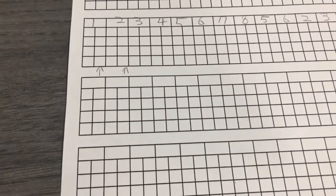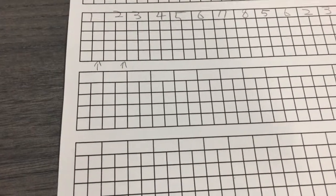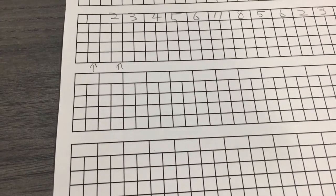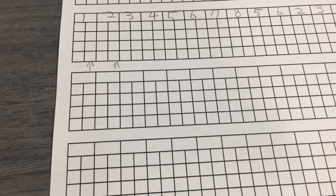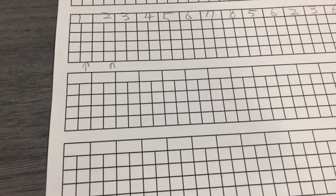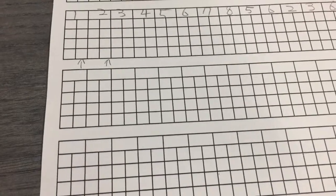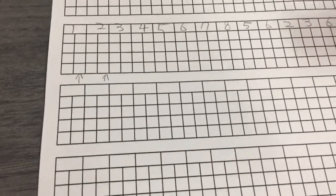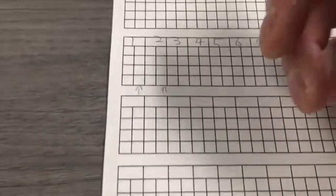Hi, I want to go over a paging replacement algorithm, which is called a second chance algorithm. So for the algorithm, we need a reference bit and a pointer. So let's try this.